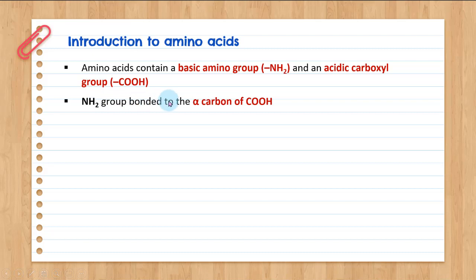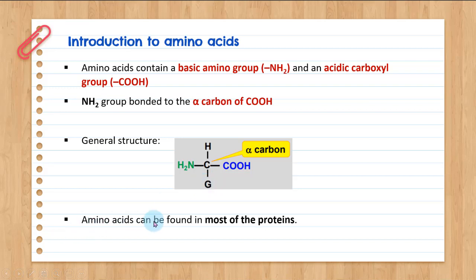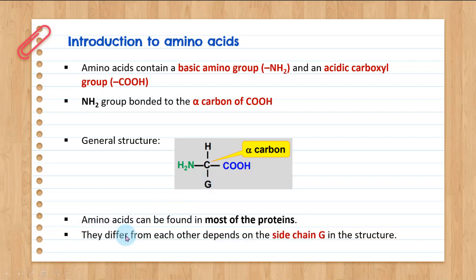The NH2 group bonds to the alpha carbon of the COOH. Based on this general formula, the amino group is attached to the alpha carbon with the COOH group. The R group is the side chain and it differs among all amino acids. Amino acids can be found in most proteins and they differ from each other depending on the side chain R, but all contain NH2 attached to the alpha carbon with a COOH group.